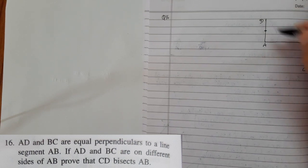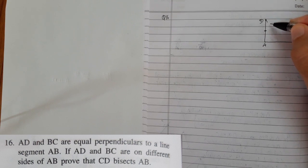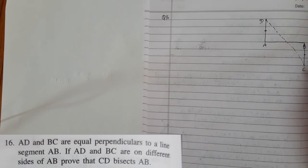Prove that CD, that means we need to construct this CD, bisects AB. That means CD bisects AB. Suppose this is O.